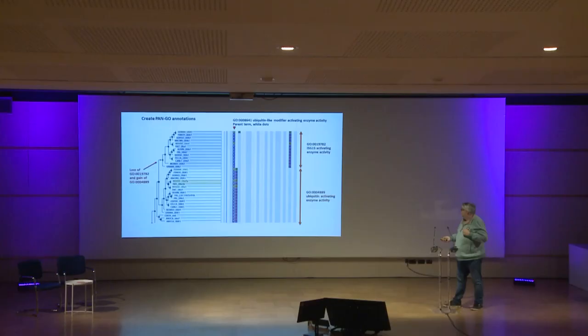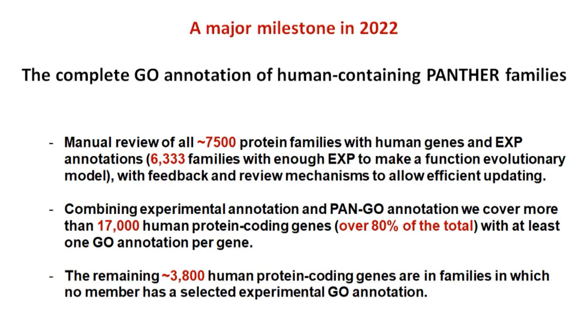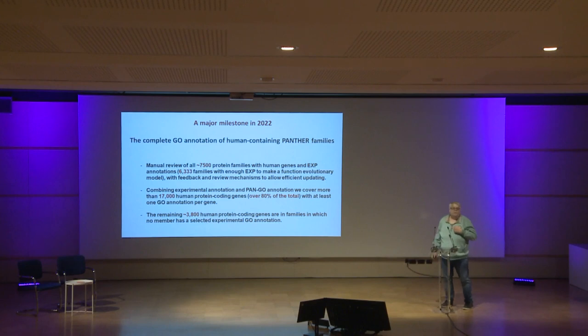So that was the principle of our project. Now let's come to the major milestone. A few months ago, we finished a review of all the protein families containing at least one human gene. This means that we now cover about 17,000 human genes. It was not possible to have all human genes, because for some families we didn't have enough experimental data to make these evolutionary models. But we can say that for over 80% of the human genes, we can now associate at least one GO term.